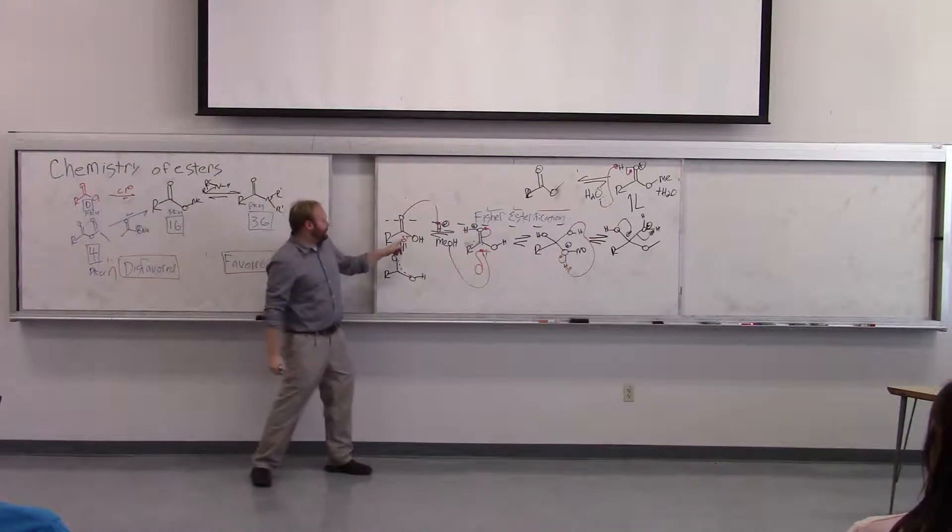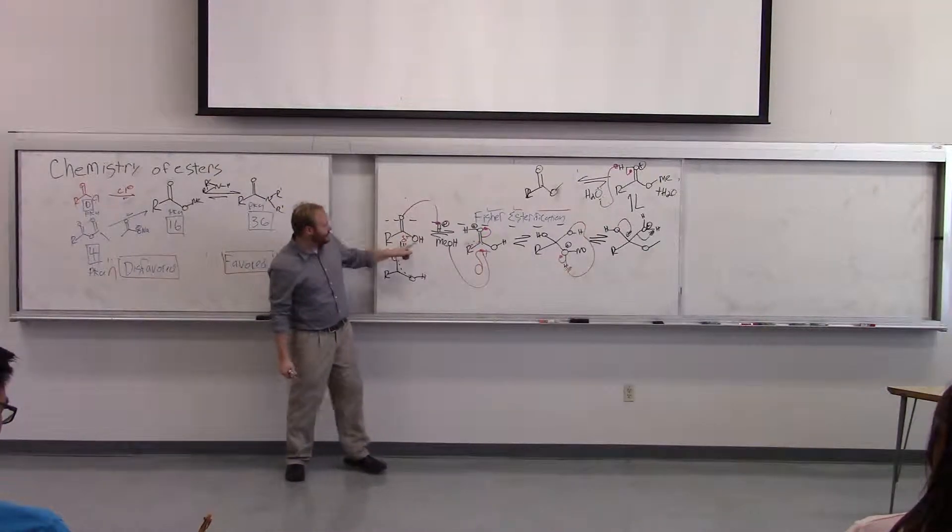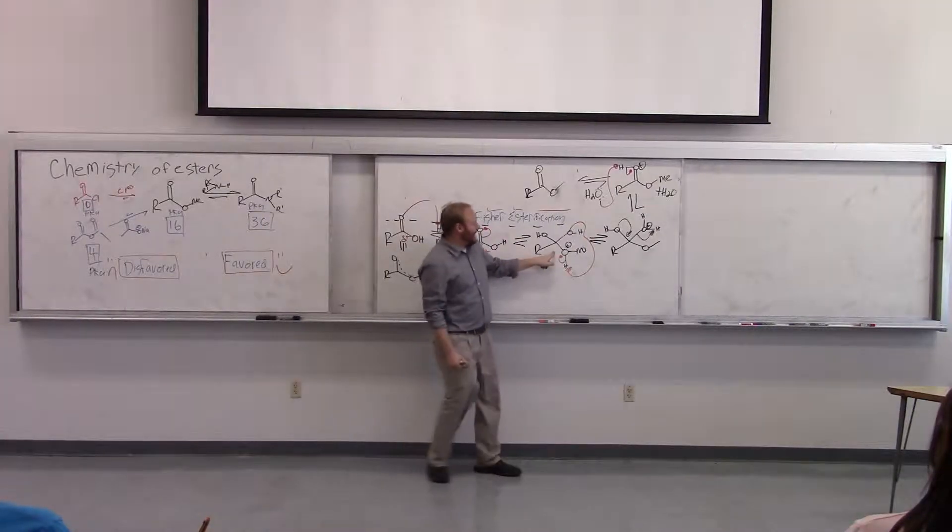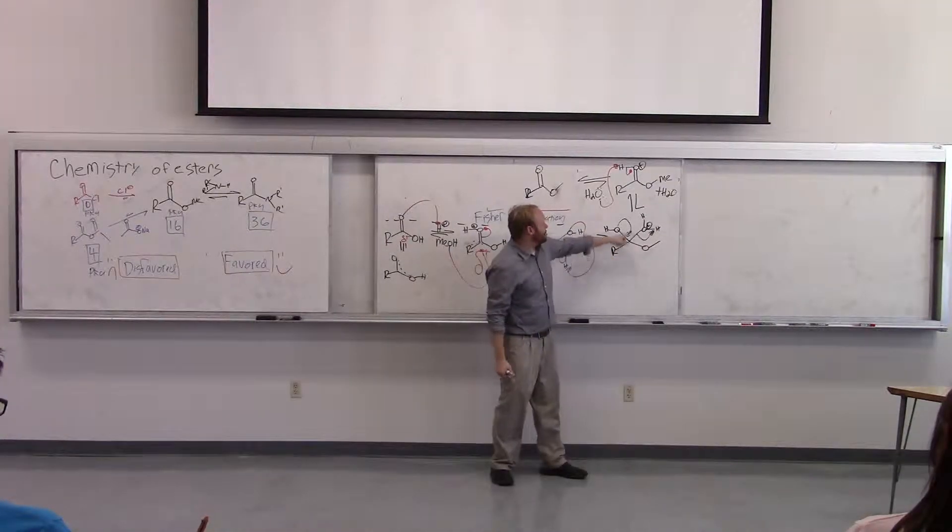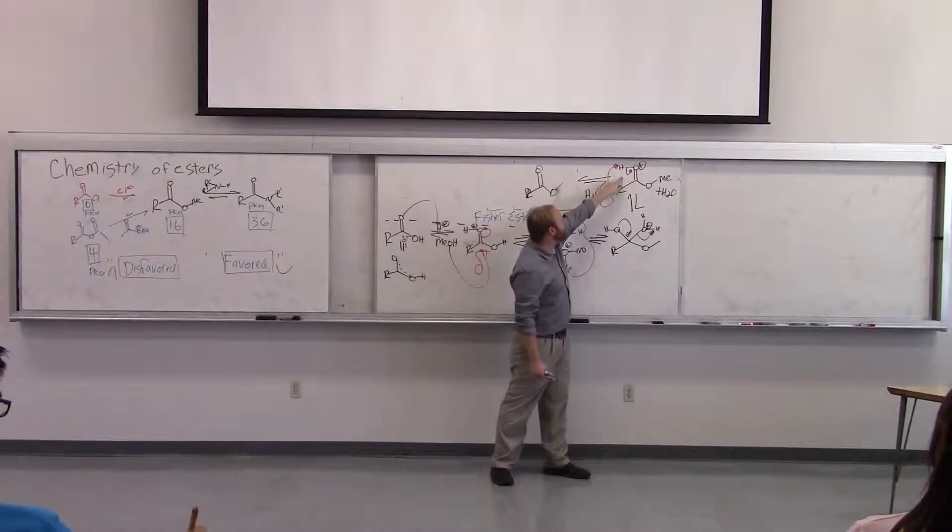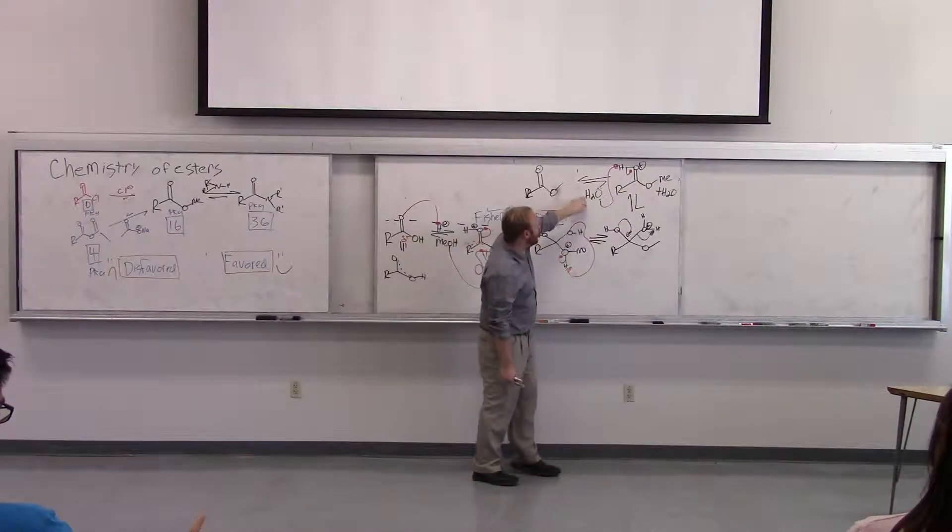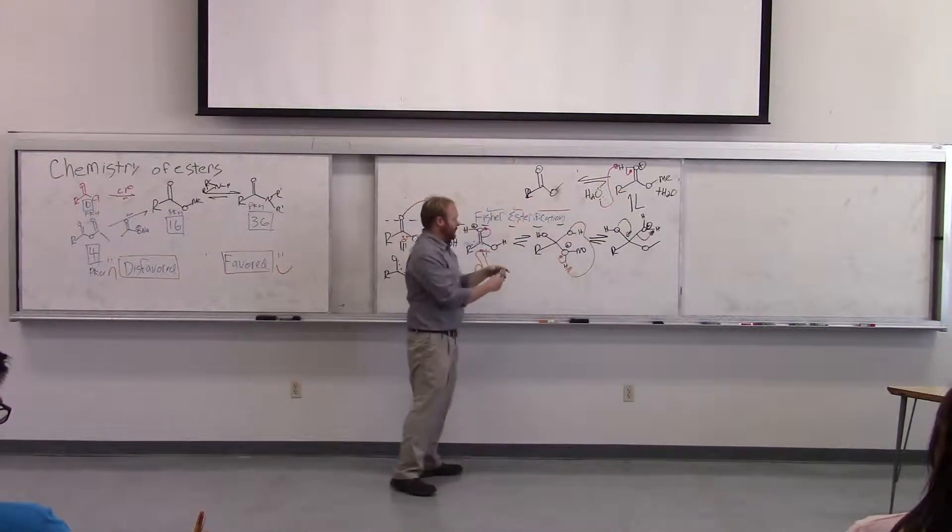So one more time, we've protonated a carboxylic acid, methanol adds in to form the acetal, then proton transfer, giving us a protonated ester. Deprotonation of the protonated ester by the water formed in this step gives us our ester.